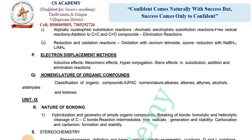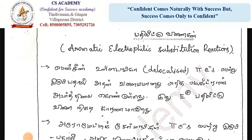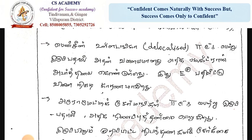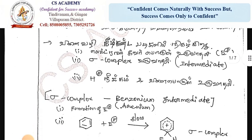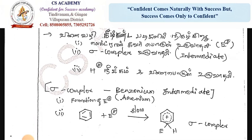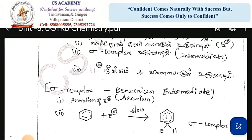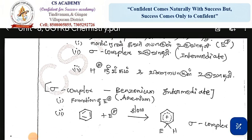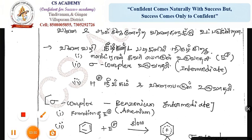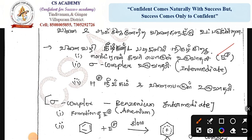In this video, we will talk about aromatic electrophilic substitution reaction. So we know that benzene is a delocalization of high electrons with alternating single and double bonds. The first step is formation of the electrophile, and the second step is the electrophile attack.